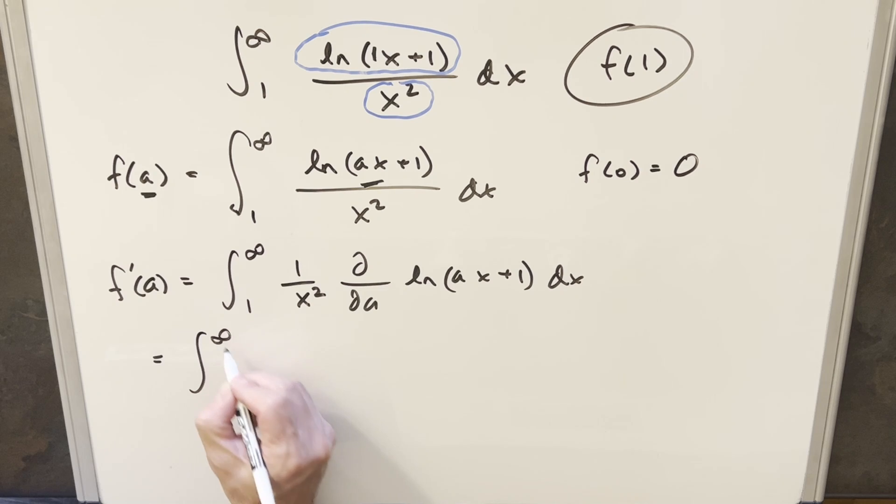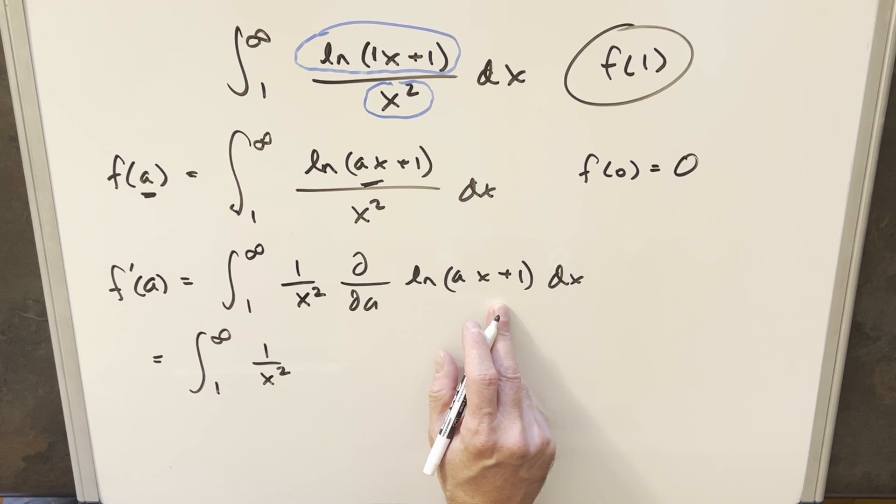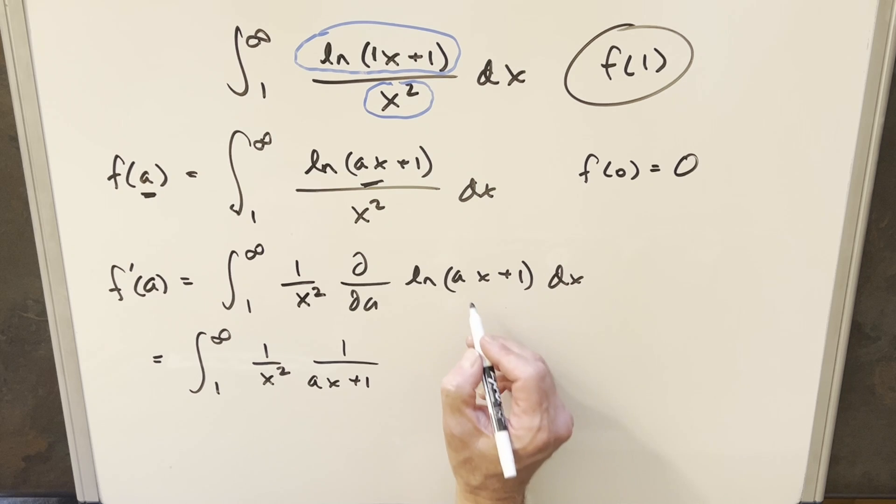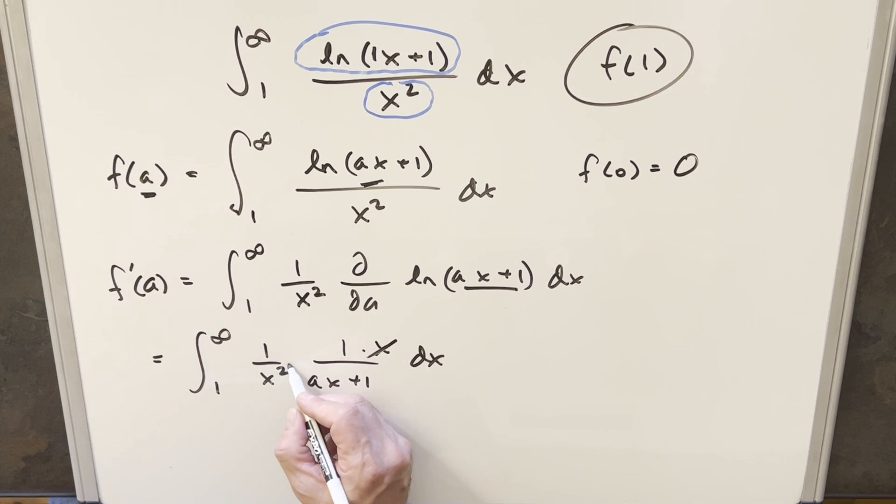We'll bring down this 1 over x squared. Now derivative here, we can first take the derivative of natural log, that's going to be 1 over ax plus 1. But then we need chain rule on this. The 1 part is 0. Derivative of ax is just going to bring out an x. And then we get some cancellation right here. We get to cancel 1 x.